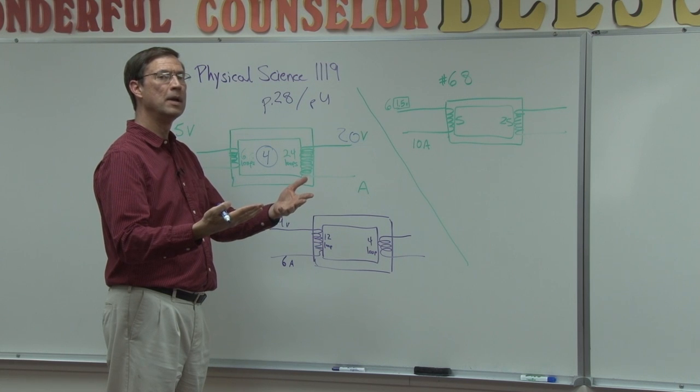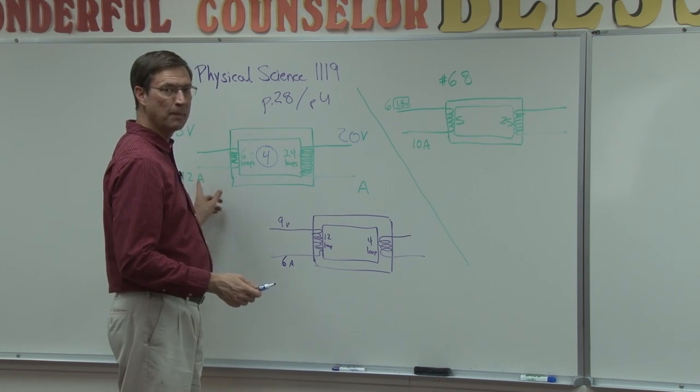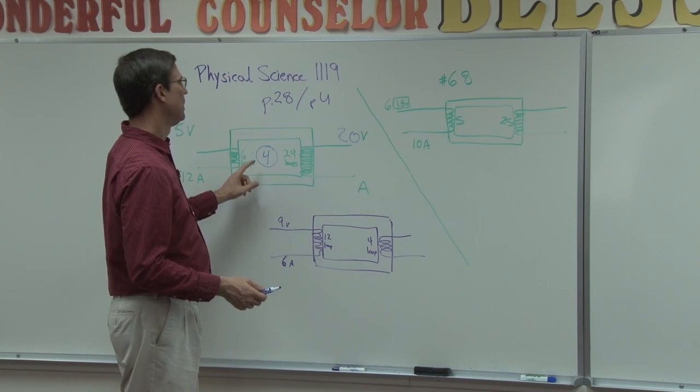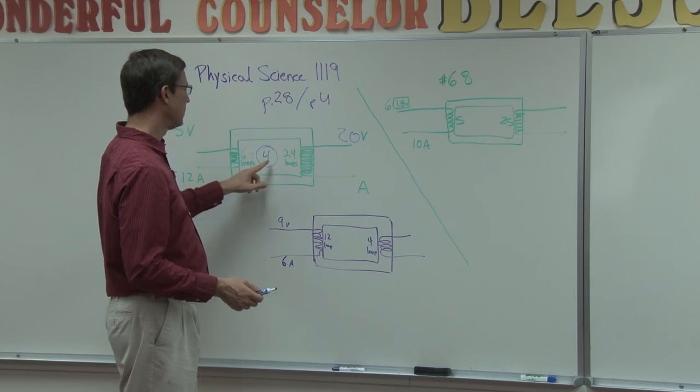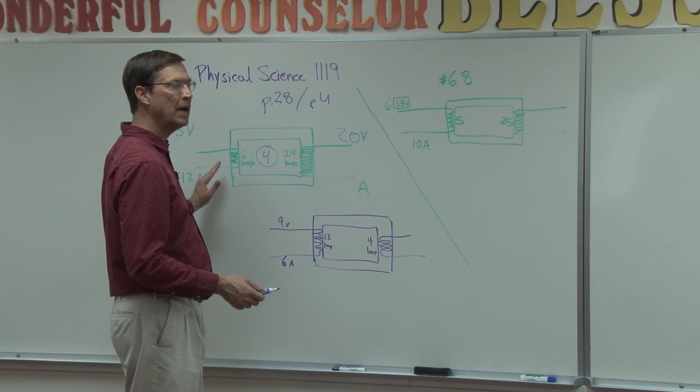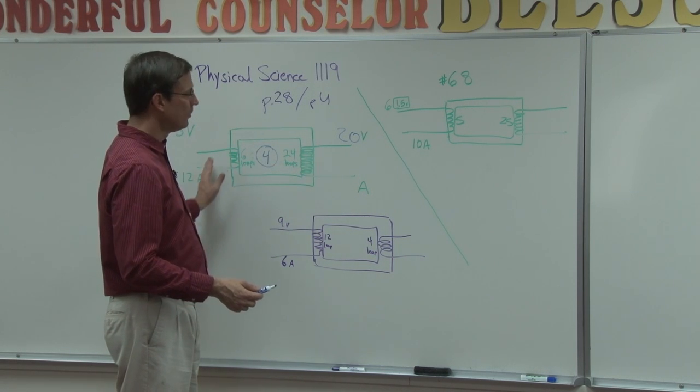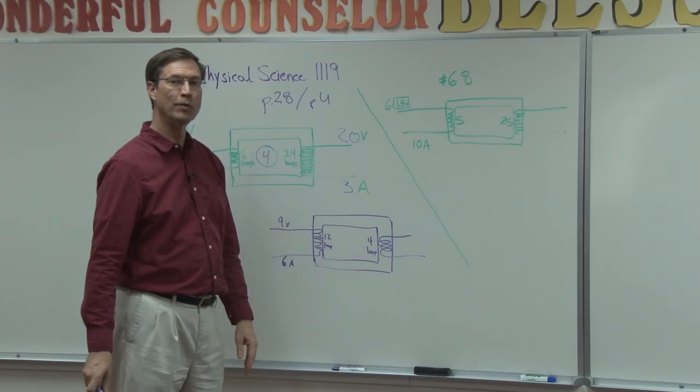At the same time, the amperage, or the current, is being stepped down. So this transformer is going to take the amperage, and we're going to still use the factor 4, but this time on the bottom, we're dividing by the 4. So I'm starting with 12 amps, divide by 4, and I end up with 3 amps over here.